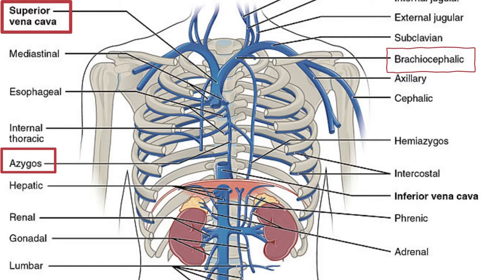The SVC also receives tributaries from several minor vein groups: mediastinal veins, esophageal veins, and pericardial veins. It then descends vertically through the superior mediastinum, behind the intercostal spaces and to the right of the aorta and trachea. At the level of the second costal cartilage, the SVC enters the middle mediastinum and becomes surrounded by the fibrous pericardium. It terminates by emptying into the superior aspect of the right atrium at the level of the third costal cartilage.